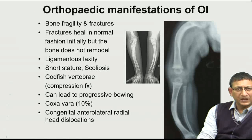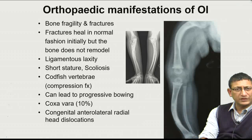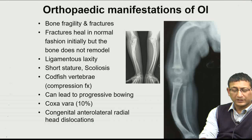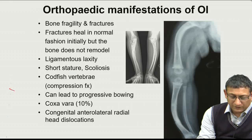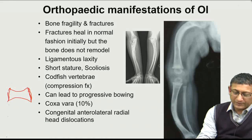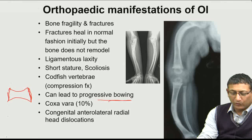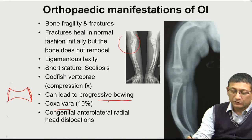Fractures usually heal in normal fashion but remodeling is absent. Ligament laxity, short stature, and scoliosis are also features. Because bones become weak and discs remain strong, codfish vertebrae can develop due to compression at multiple sites. Progressive bowing of the limbs, coxa vara, and radial head dislocation can also occur due to bone deformity.